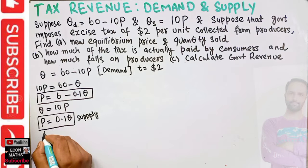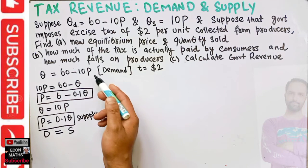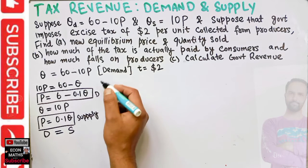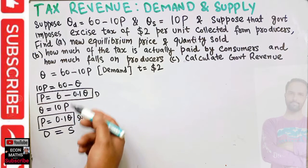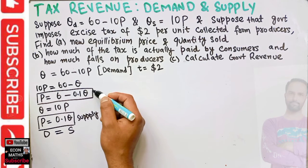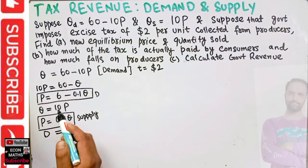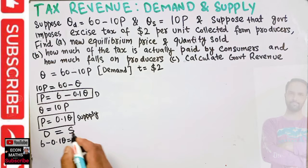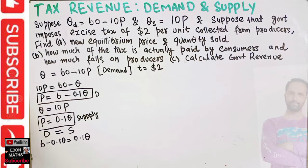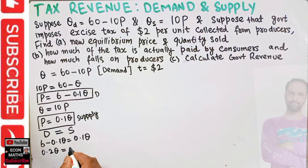To find the initial equilibrium, we set the inverse demand equal to the inverse supply. So 6 minus 0.1q equals 0.1q. Transposing, this becomes 0.2q equals 6.